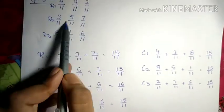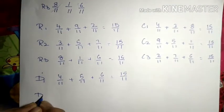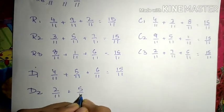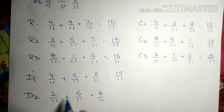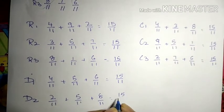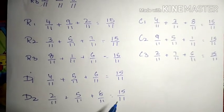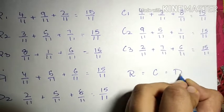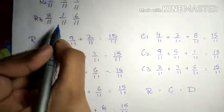Now diagonal 2 is this one. So this is diagonal 2. Diagonal 2 is equal to 2/11 plus 5/11 plus 8/11. Now 8 plus 2 is 10, 10 plus 5 is 15. So by the sum of all diagonals is 15/11. So row is equal to column is equal to diagonal is 15/11. So this means that this square is a magic square.